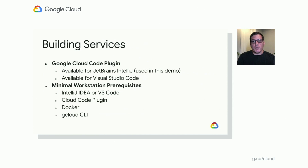For our first step, we're going to look at how we can build services. We're going to use the Cloud Code plugin that comes with IntelliJ. You could also use Visual Code if that's your preferred IDE. I've already installed IntelliJ, the Cloud Code plugin, Docker, and the gcloud CLI. So if you're going to follow along, you may want to do the same steps on your workstation. Let's jump into the demo and take a look at how we can build a service using the Cloud Code plugin and then get that deployed to Cloud Run.